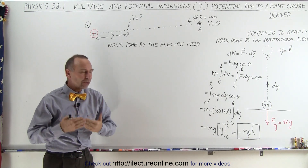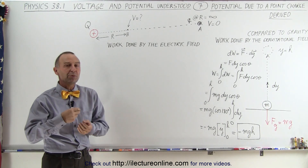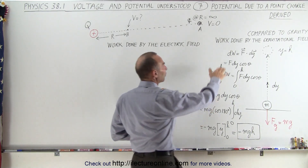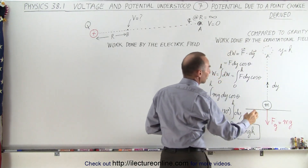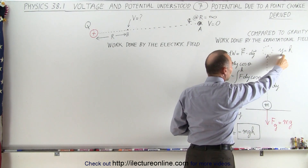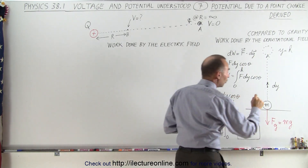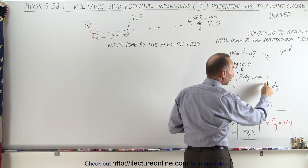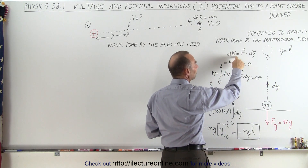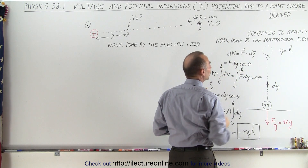Before we show you how to do that, let's compare this to how we would find the work done by moving an object with mass through a gravitational field — specifically, the work done by the gravitational field by moving an object with mass m from the ground to some height h. The small amount of work done to move from a point to a very close adjacent point dy distance away is equal to the force on the object due to gravity times the small displacement.